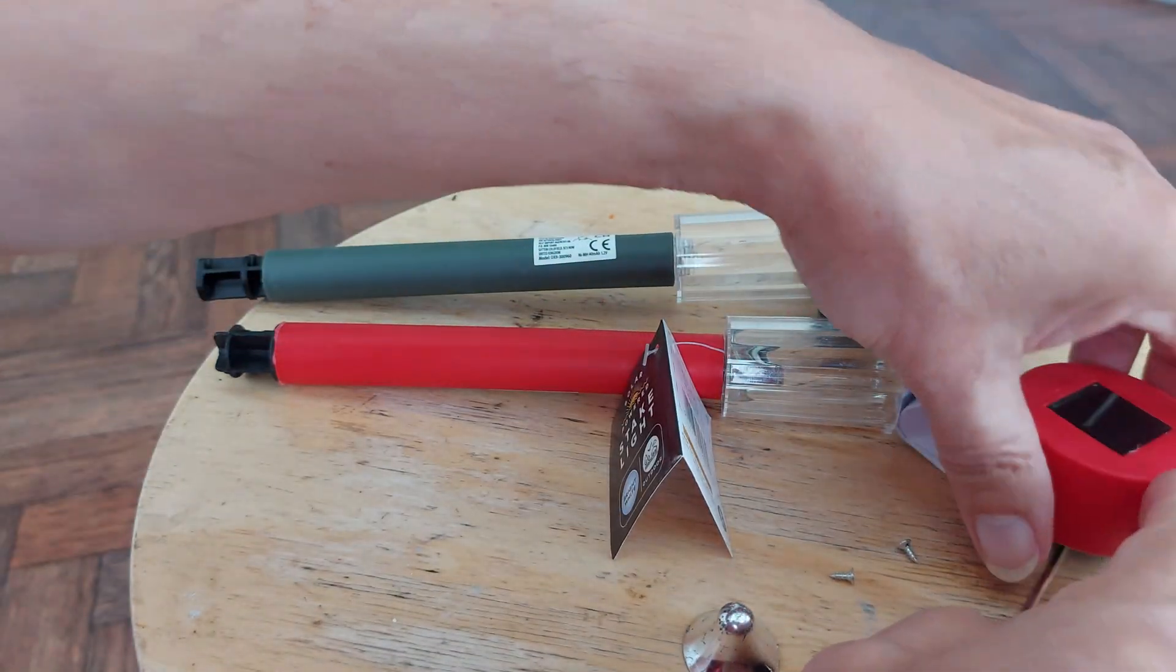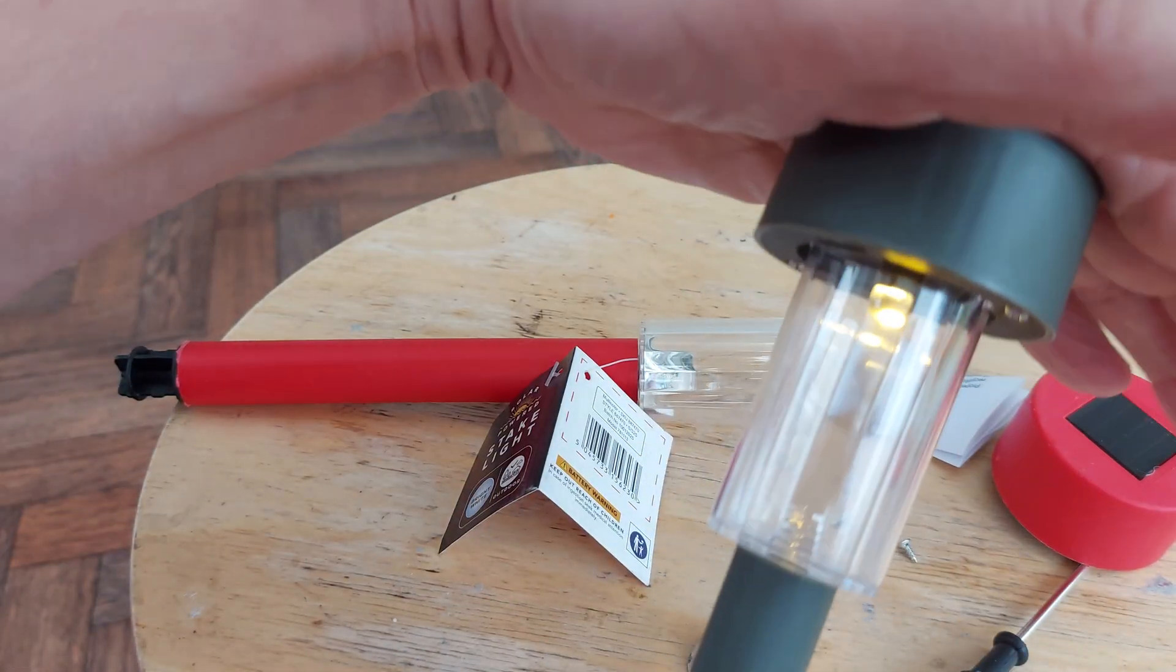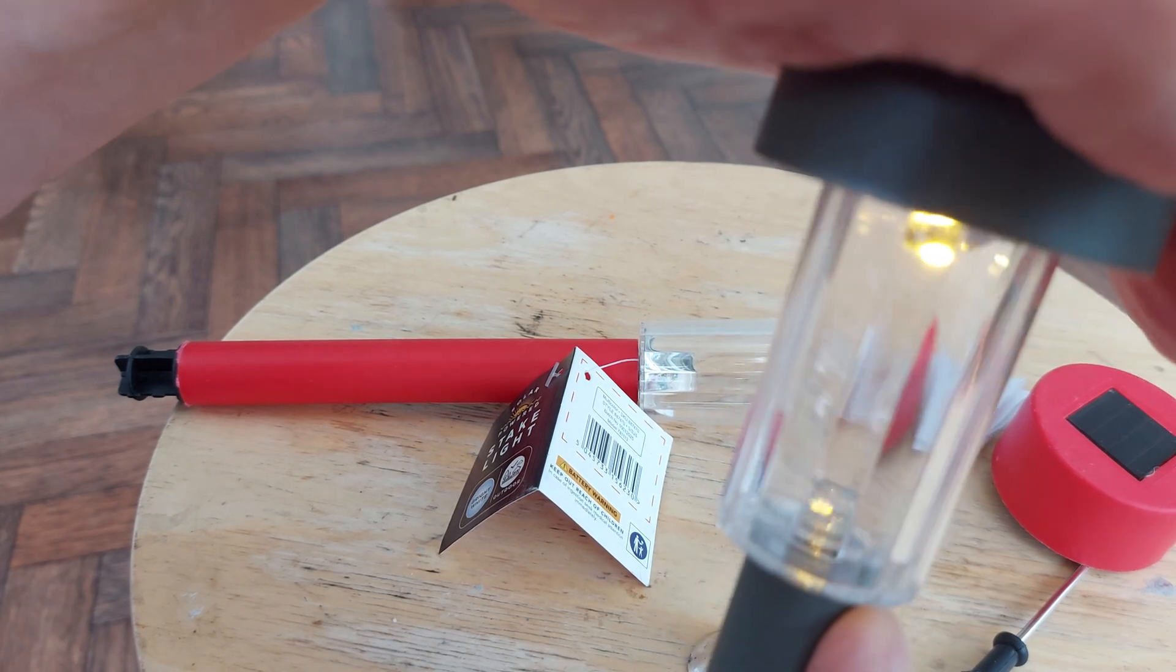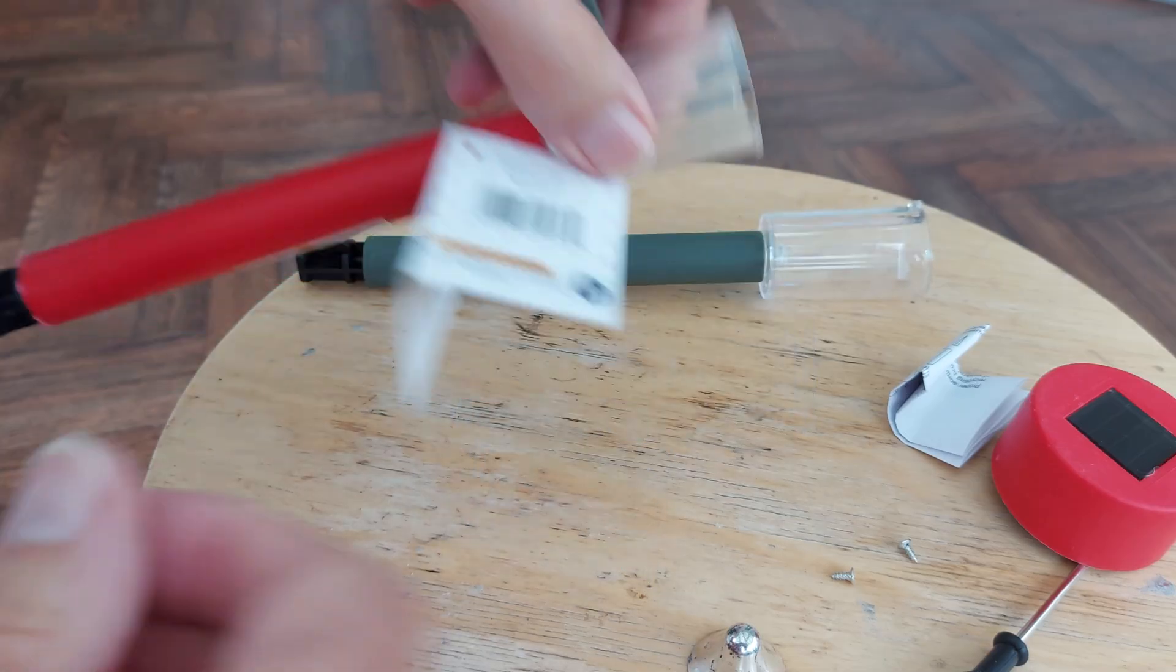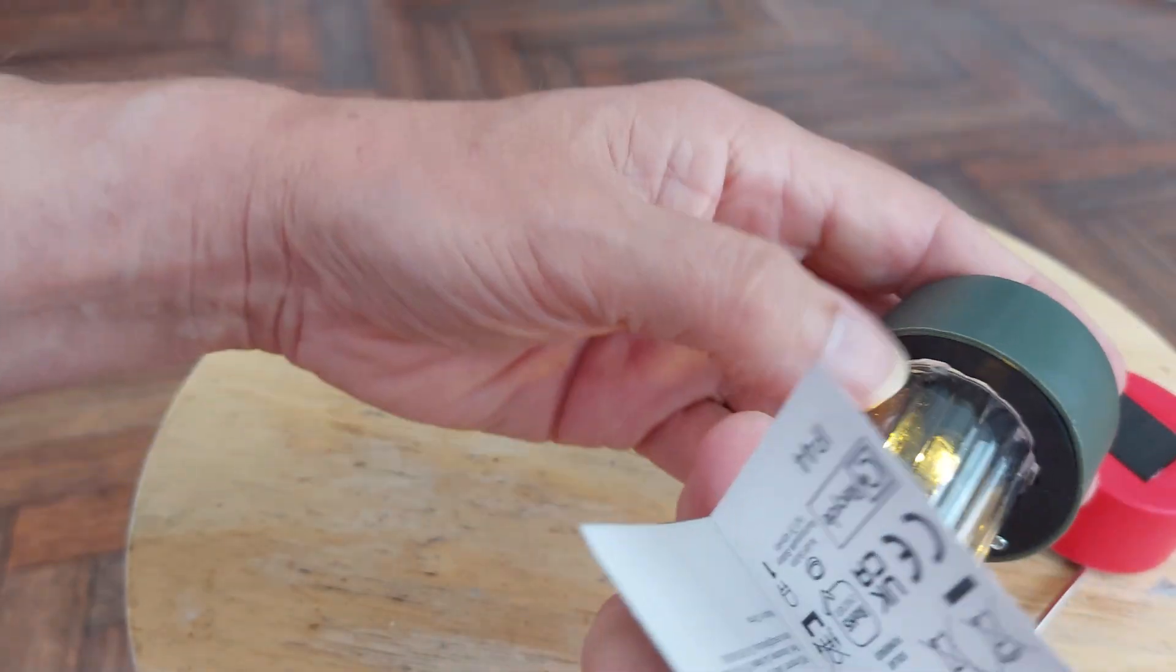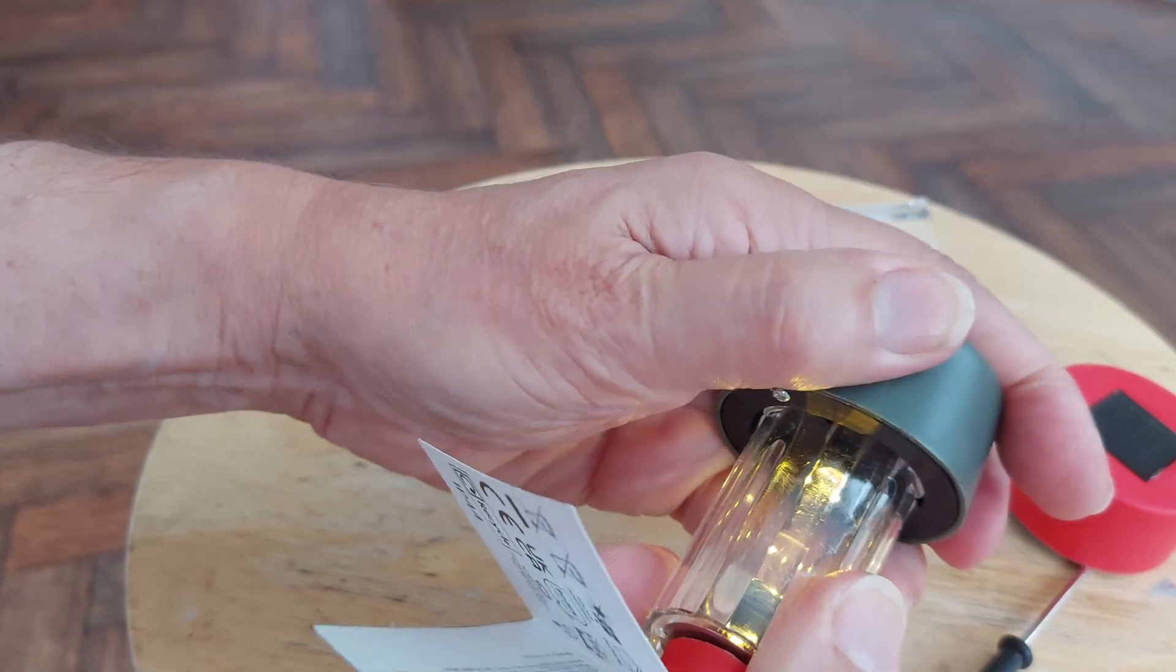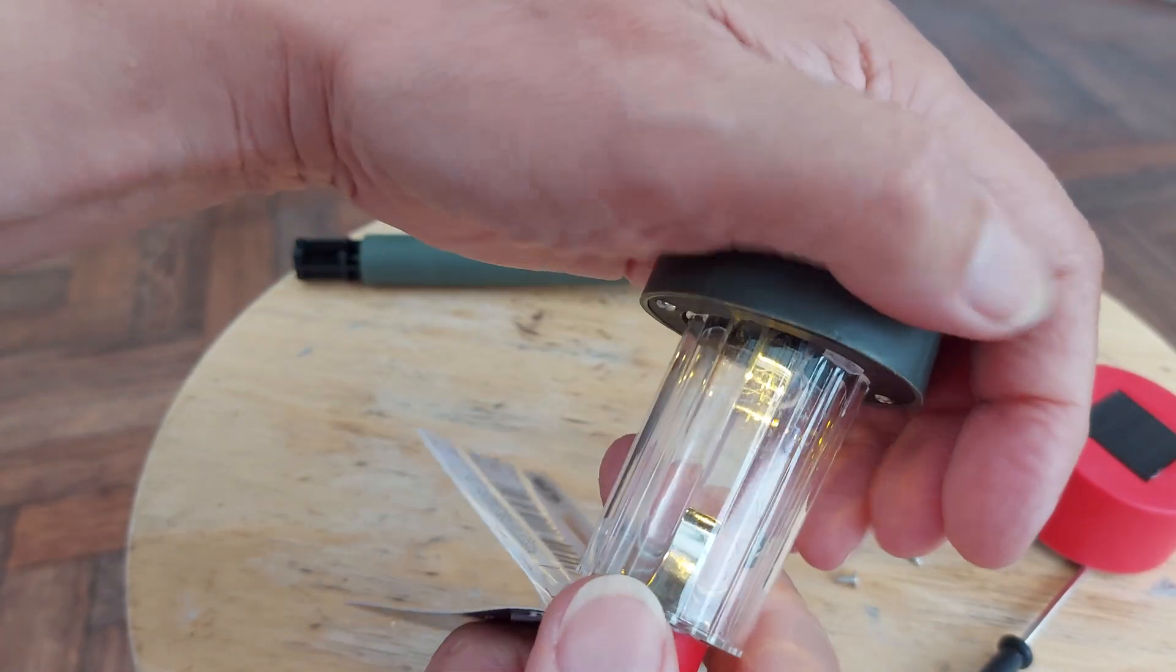I suppose if I turn that one on, we get a faint glow there if I angle it right. There we go. If I hold it over the top of this one, because it doesn't quite fit even though they're virtually identical, they don't quite fit. It's only a tiny bit of difference, but straight away...